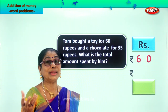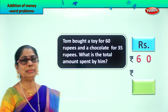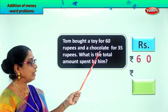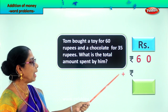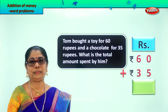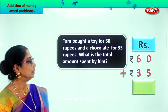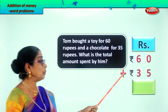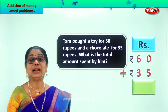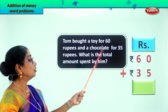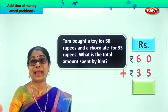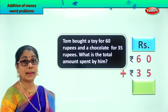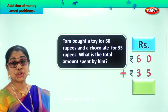Amount he spent to buy a chocolate is 35 rupees, so we write plus 35. Toy: 60 rupees, chocolate: 35 rupees. Now we have to add that to find the total amount spent by Tom at the shop.